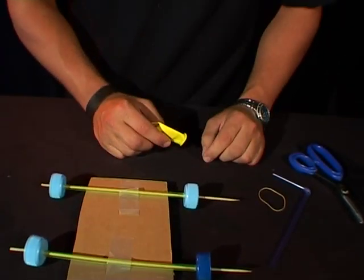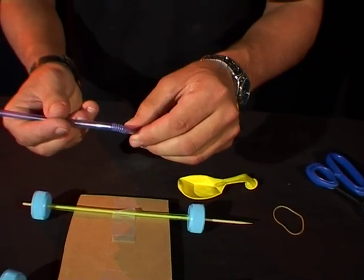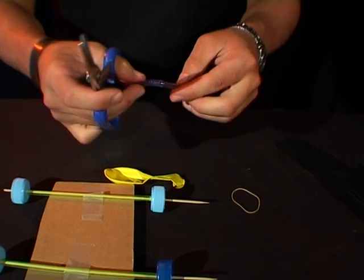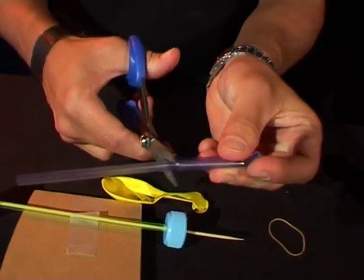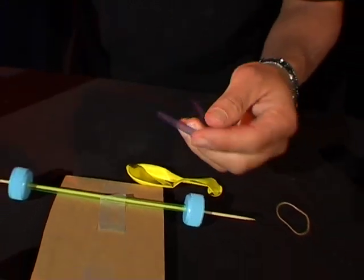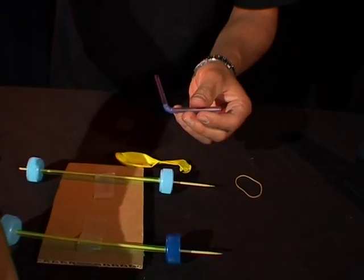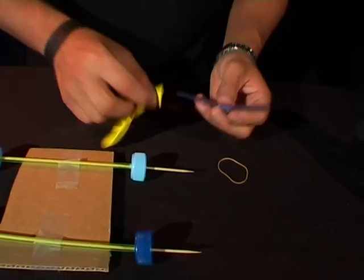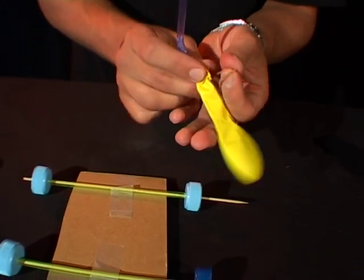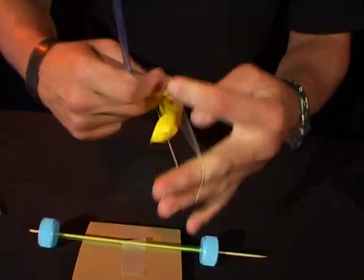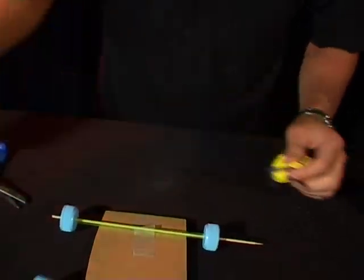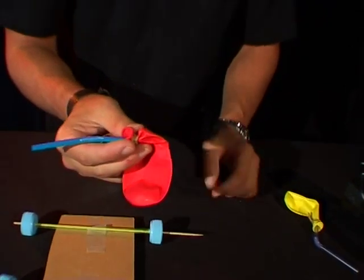Alright, now the next part. Take your bendy straw like this and your balloon and your scissors and cut your bendy straw so you've got two pieces about the same length. So you've got a nice little bendy piece like that and get rid of that. And take your balloon on the end of one section of the bendy straw, elastic band on the outside, and just wrap it around a few times so the balloon stays on to the end of the straw.